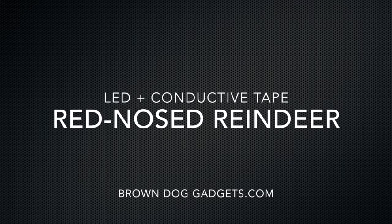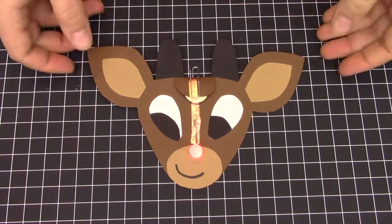Hello! This is Robin of Brown Dog Gadgets, and today I'm going to show you how to make a glowing red-nosed reindeer with conductive tape.